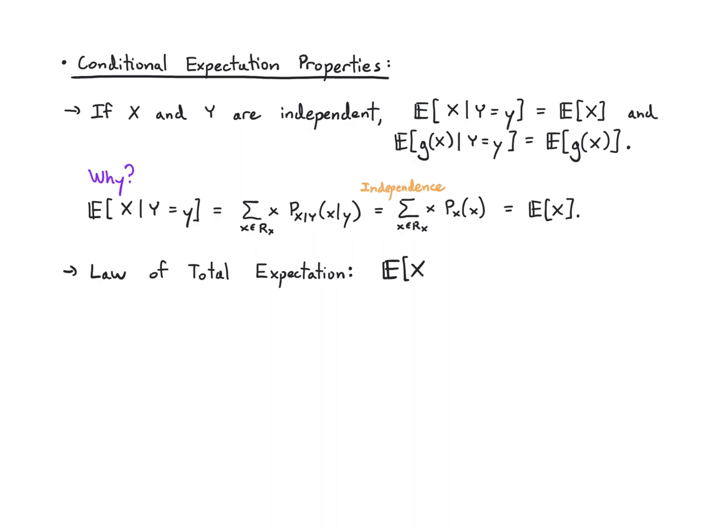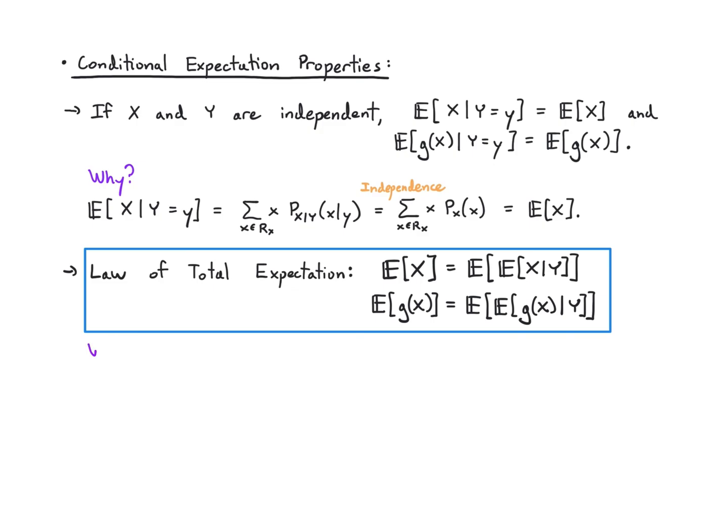A more important property is the law of total expectation. What it says is that if you're interested in getting the average value of a random variable, what you can do is average the conditional expectation. Think that you first compute the conditional expectation given Y — that gives you something that depends on Y, and Y is random — and then you average that. Interestingly, that will give you the expected value of X, or the expected value of g(X). We're going to see this in an example, but first let's see why it's true.